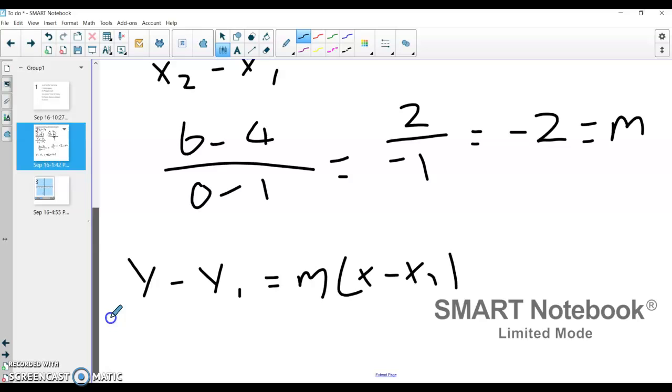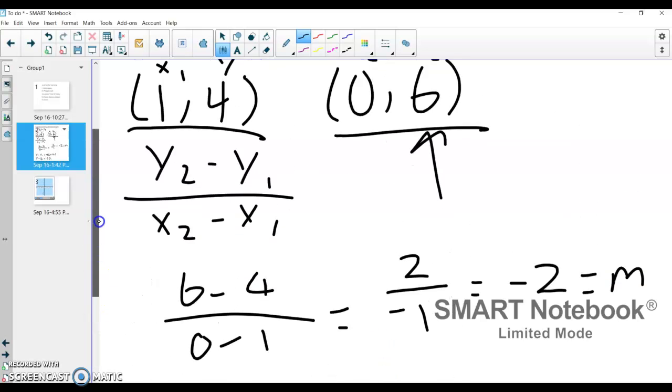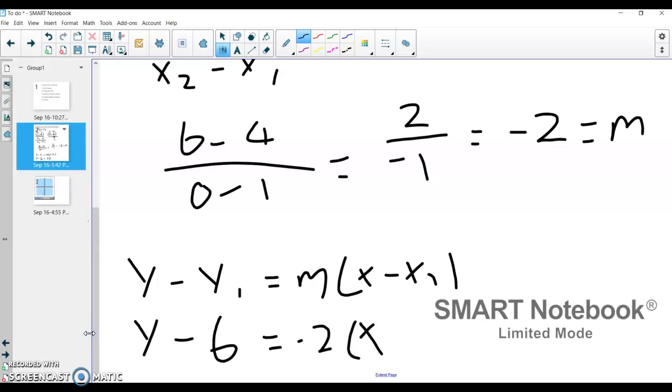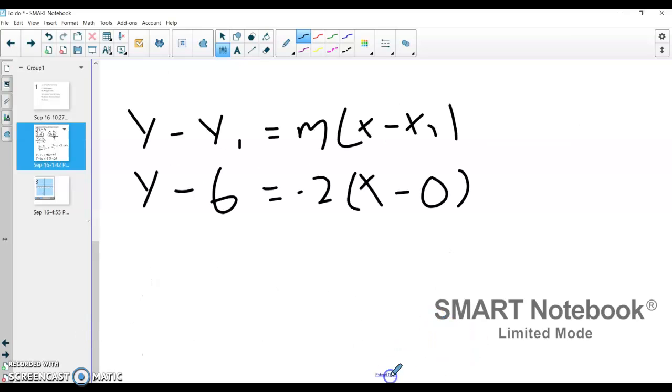Okay? And so y minus y1, my y is 6, and so I'm going to do y minus 6. I'm going to plug in my slope for m, which is negative 2. And I'm going to plug in my x1, which, because I chose this point, is 0.